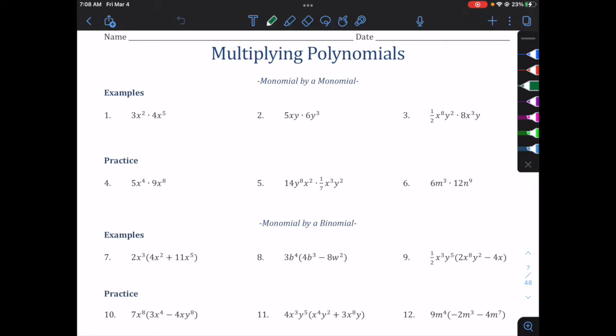If we look at some of these examples, in number one we have the first term, 3x squared, that's a monomial, times 4x to the fifth, that's a monomial. The key to multiplying monomials is to multiply the coefficients, so each of these monomials has a coefficient, the first one's coefficient is 3, the second one's coefficient is 4. 3 times 4, 12.